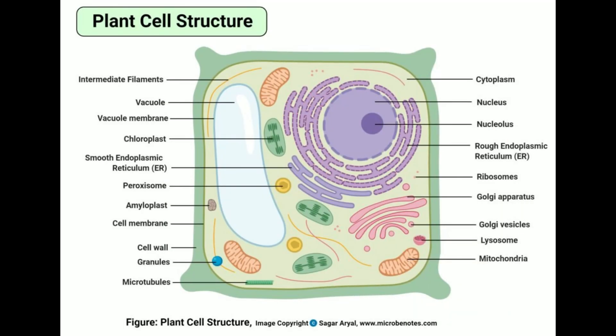Animal cells are different from plant cells: they have a smaller vacuole, no chloroplasts, and have additional organelles such as centrioles that generate the mitotic apparatus required during cell division. Fungal Cells: Fungal cells are similar to plant cells in having a rigid cell wall; however, it is made up of chitin, not cellulose. Some fungi are unicellular like yeast, which have tiny holes in their cell membrane that allow exchange of cytoplasm and other organelles.